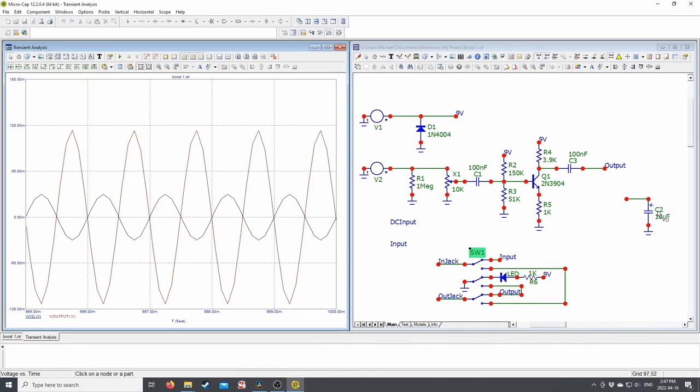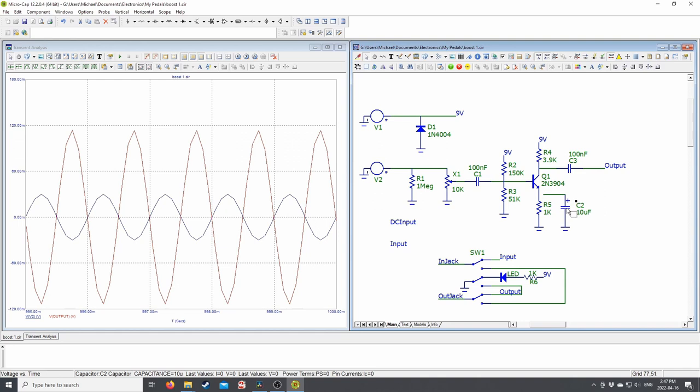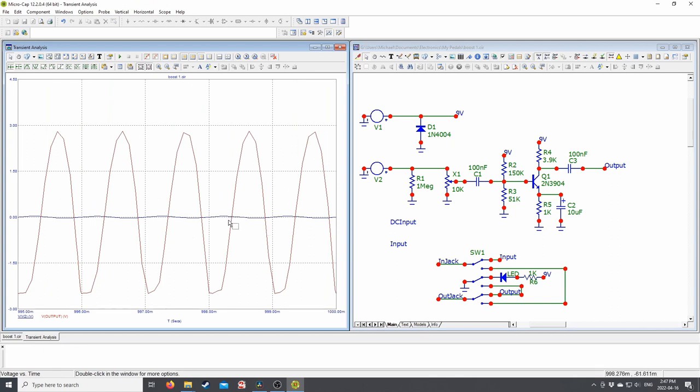Okay, so without C2 we are still boosting the circuit. As you can see I've probed the input. So this is our raw guitar signal. That's the blue line here. And I've probed the output as well which is the red line. And it's being boosted by quite a lot, maybe three times. But if we add C2 it's going to jump up a lot. So we're boosting this signal probably like a hundred times.